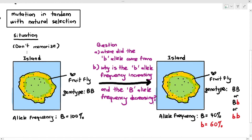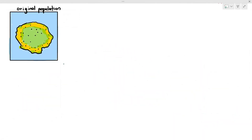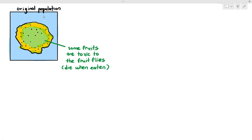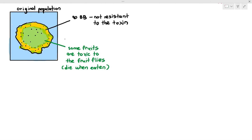In the original population, I'll add some extra information. On the island, there are particular fruits that are toxic to the fruit flies — if the fruit flies eat these fruits, they may die. But the fruit flies don't only eat those particular fruits; they also eat other types of fruits. Also, in the original population, they were large B, large B — homozygous dominant — and they were not resistant to the toxin, meaning if any fruit fly ate that fruit, they would die.